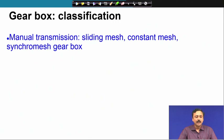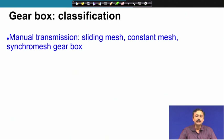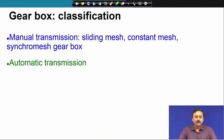Gear boxes are classified as manual transmission. Under manual transmission, we can have sliding mesh, constant mesh, and synchromesh gear boxes. Under automatic transmission, we use epicyclic gear trains.